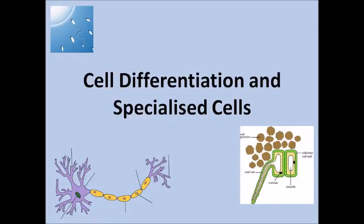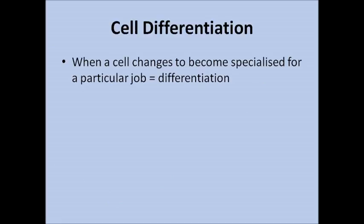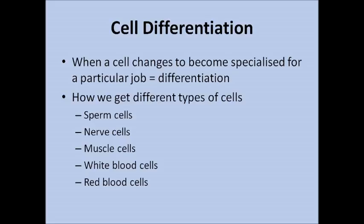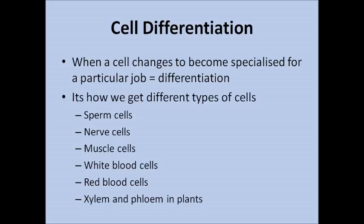In this video I'm going to talk through cell differentiation and specialised cells. Cell differentiation is when a cell changes to become specialised for a particular job and it's how we get all the different types of cells of the body, such as sperm cells, nerve cells, muscle cells, white blood cells, red blood cells, xylem and phloem cells in plants, and root hair cells in plants.